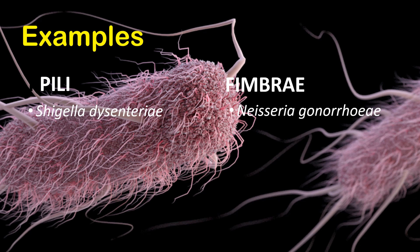Now the examples: a bacterial cell having pili is Shigella dysenteriae, which causes shigellosis — that is bacterial dysentery — and it is a gram-negative bacteria. Whereas Neisseria gonorrhoeae has fimbriae structures and causes gonorrhea, which is a sexually transmitted disease.